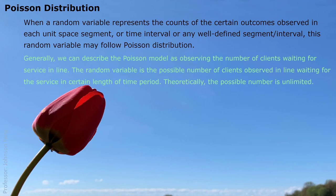Generally, we can describe the Poisson model as observing the number of clients waiting for service in line. The random variable is the possible number of clients observed in line waiting for some kind of service in certain lengths of time period. Theoretically, the possible number is unlimited, but they are all non-negative whole numbers. So that means could be 0, 1, 2, 3, and so on, unlimited.